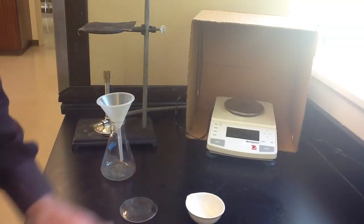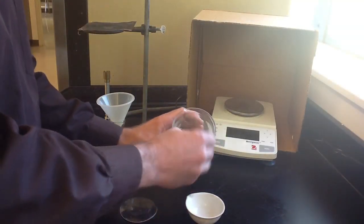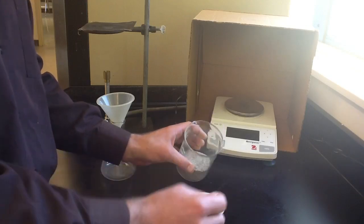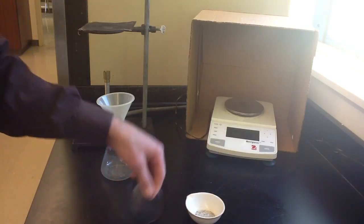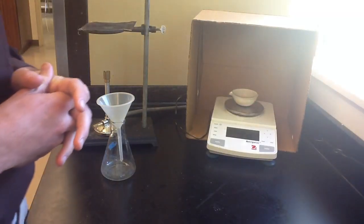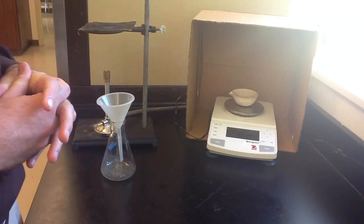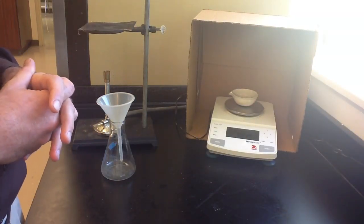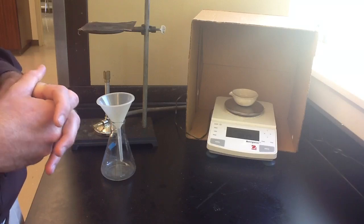And now we're going to take our sample of salt and sand mixture. So we'll just stir this around and take a random sample of salt and sand. Looks like a good amount. And we'll weigh it again. And we have 88.39 grams for the salt and sand mixture.